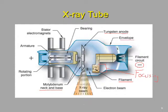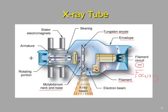If an electron strayed out before we energized the anode, it might hit somewhere else on the anode and produce what we call off-focus radiation. We want that focusing cup to be negatively charged to push the electrons back toward the filament. When we energize the anode with a kilovoltage of potential energy, the electrons are going to jump and be accelerated close to the speed of light across roughly an inch of space.